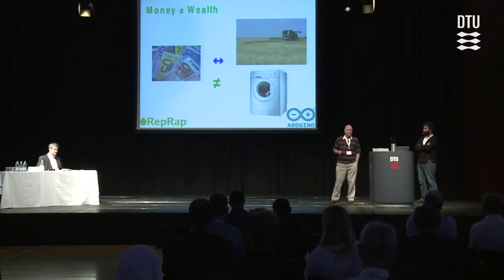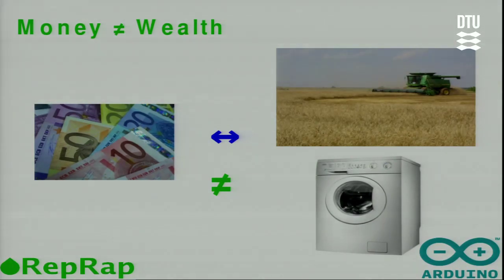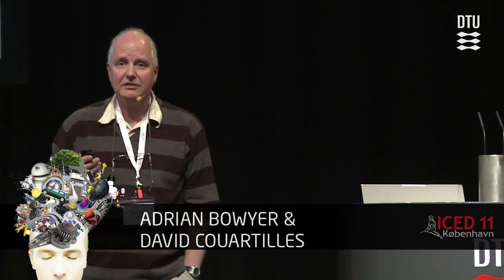First, let's dispel an illusion. Wealth and money are not the same thing. You can sometimes convert between the two, but they're not exactly equivalent. For example, if you have a garden and you grow your own vegetables, you've created some wealth that wasn't there before — you then eat them, and that wealth has given you some benefit — no money has changed hands. Wealth is stuff. Money is merely a way to get to stuff, or a way of turning stuff from one type into another.